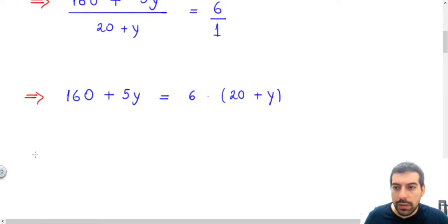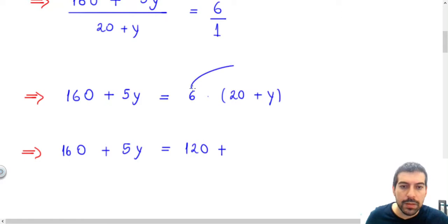Let's continue here. I will have 160 plus 5Y equal to, I will distribute the 6 here, and I will have 120 plus, 6 times 20 is 120, plus 6 times Y is 6Y.